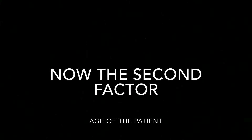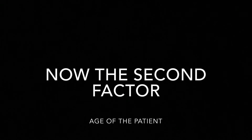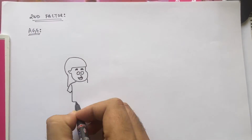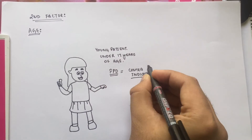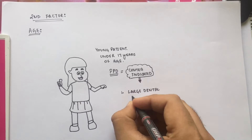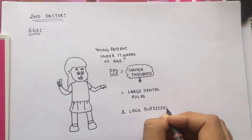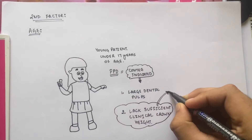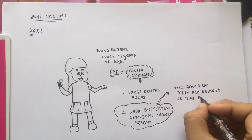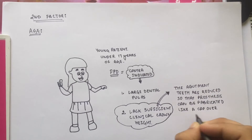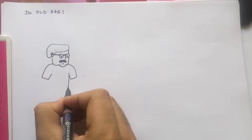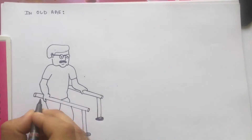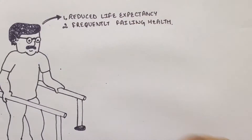This concludes the first factor. The second factor is the age of the patient. In patients under the age of 17 years, a fixed partial denture is contraindicated because they have large dental pulps and also lack sufficient clinical crown height. We need sufficient clinical crown height because in a fixed prosthesis the abutment teeth are reduced so the prosthesis can be fabricated like a cap. In old age, reduced life expectancy and frequently failing health contraindicate the use of expensive fixed partial dentures.